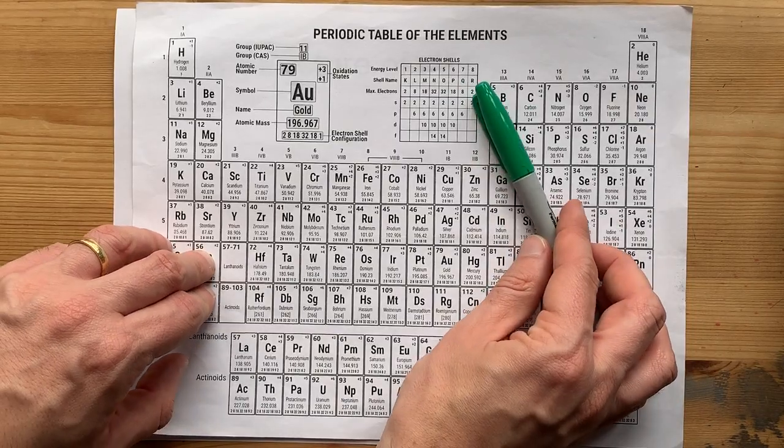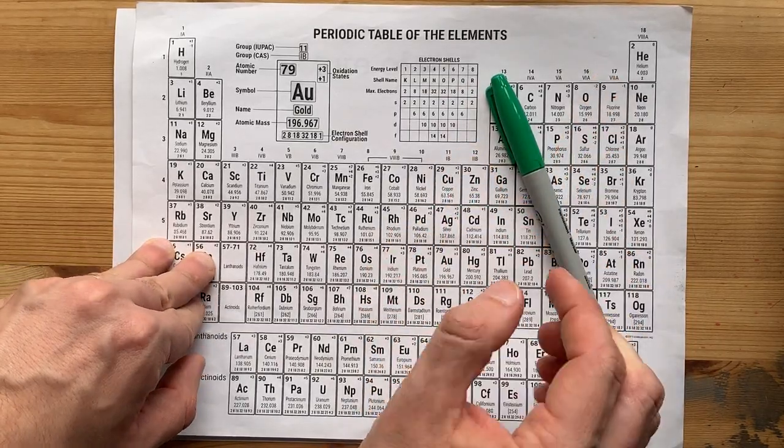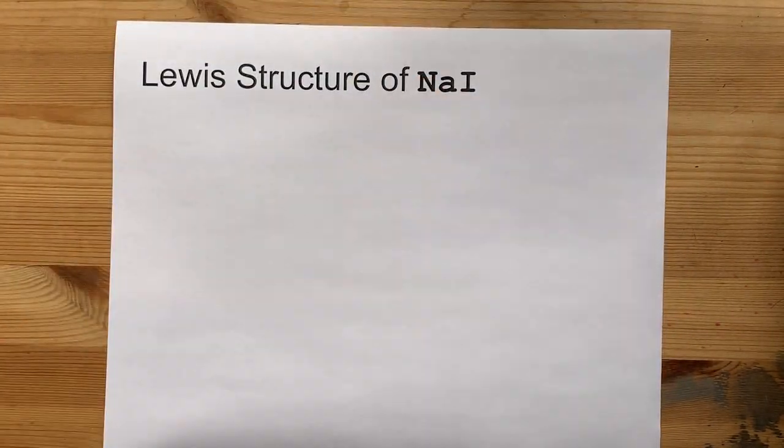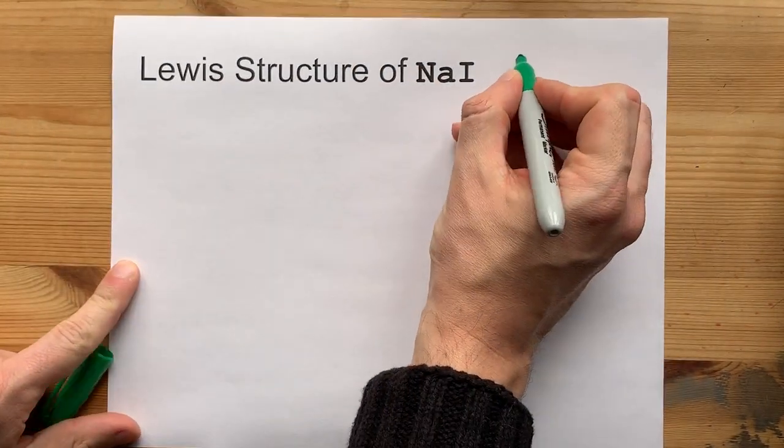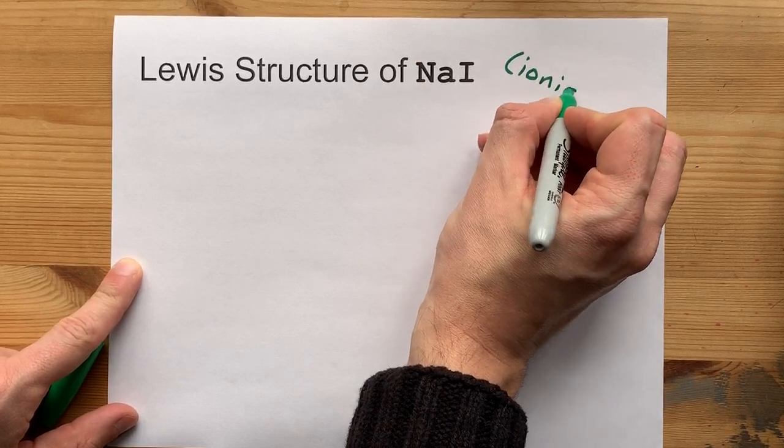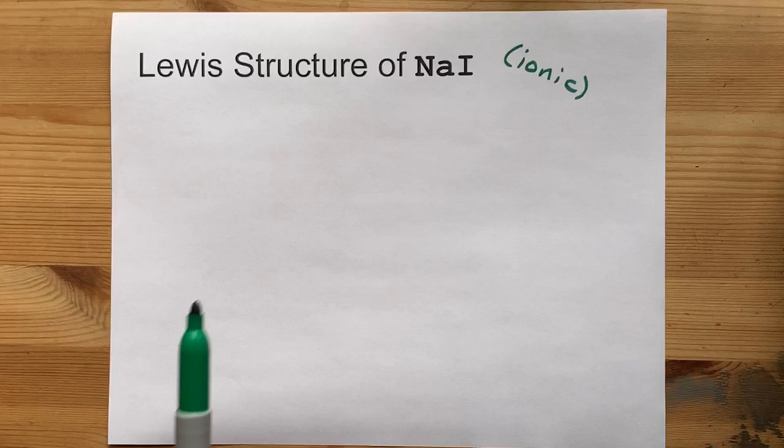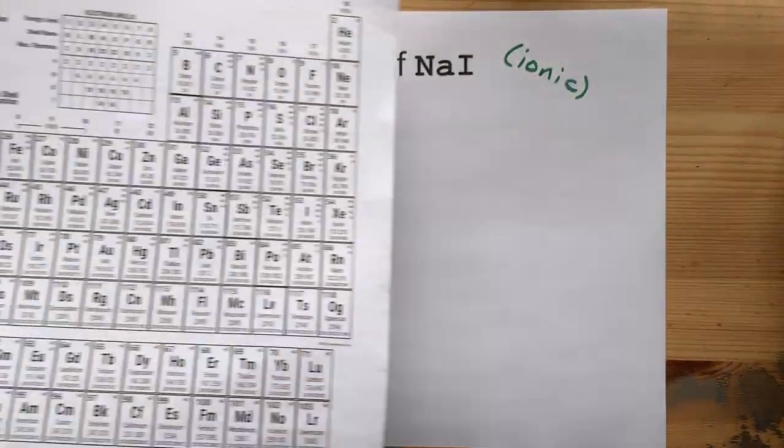Iodine is a non-metal. It's in the halogen group and comes from the right-hand side of the staircase. A metal and a non-metal will always combine to give you an ionic compound where the metal gives away its electrons to the non-metal. Let's see how that might work.